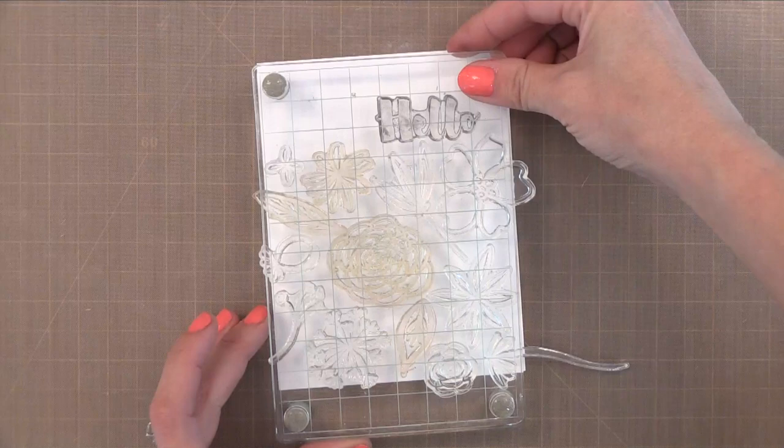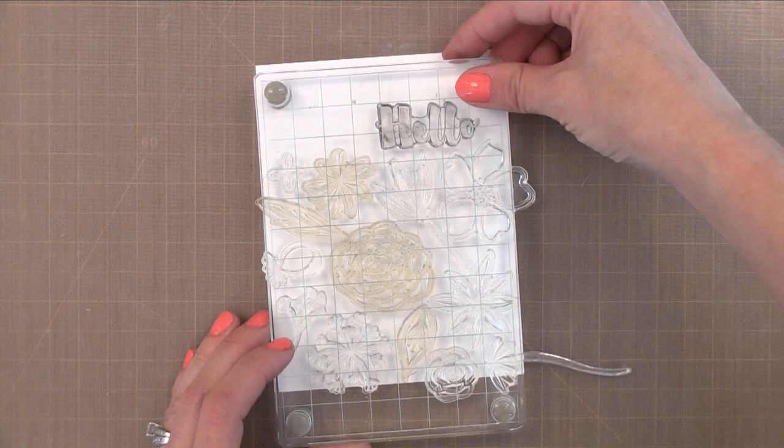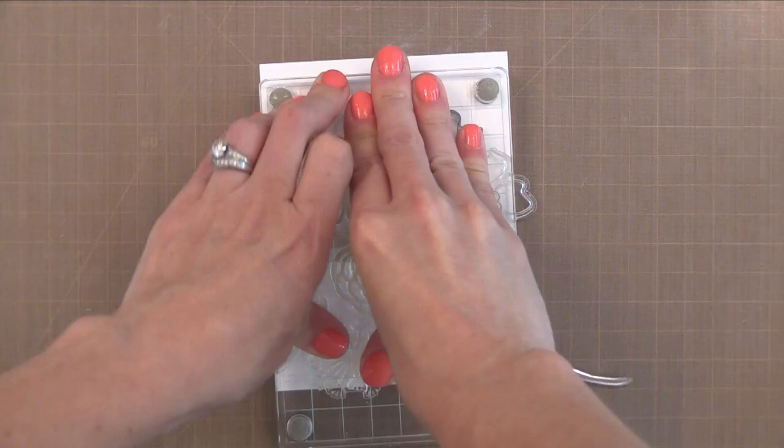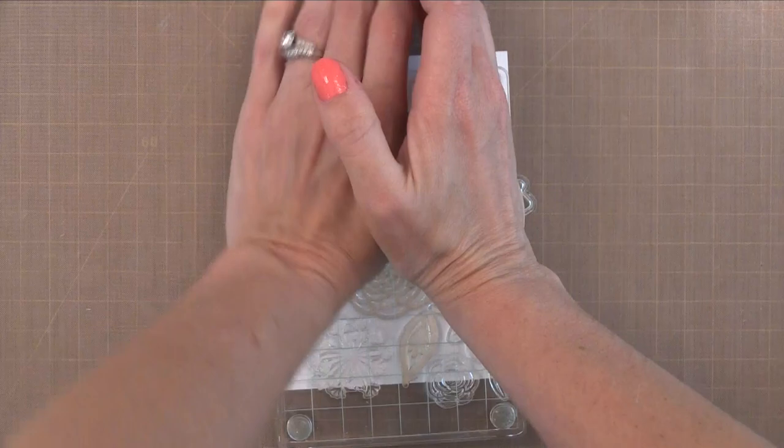So I've inked up my stamp with VersaMark and I'm going to stamp this right onto my card. Now you'll notice some of the stamped images are hanging off of the block. That's okay. I'm going to trim this down a little bit so it doesn't matter if the edges aren't perfect. Now you won't see the image at first because it is a clear ink. I'm going to press down very firmly just to make sure all the ink transfers.